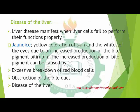Liver disease manifests when liver cells fail to perform their functions properly. If anything goes wrong and the liver cannot perform those functions, then there is a problem with the liver. Jaundice can be both a symptom and a disease. It is not only newborn babies that develop jaundice — adults too can have jaundice as a sign of liver disease.